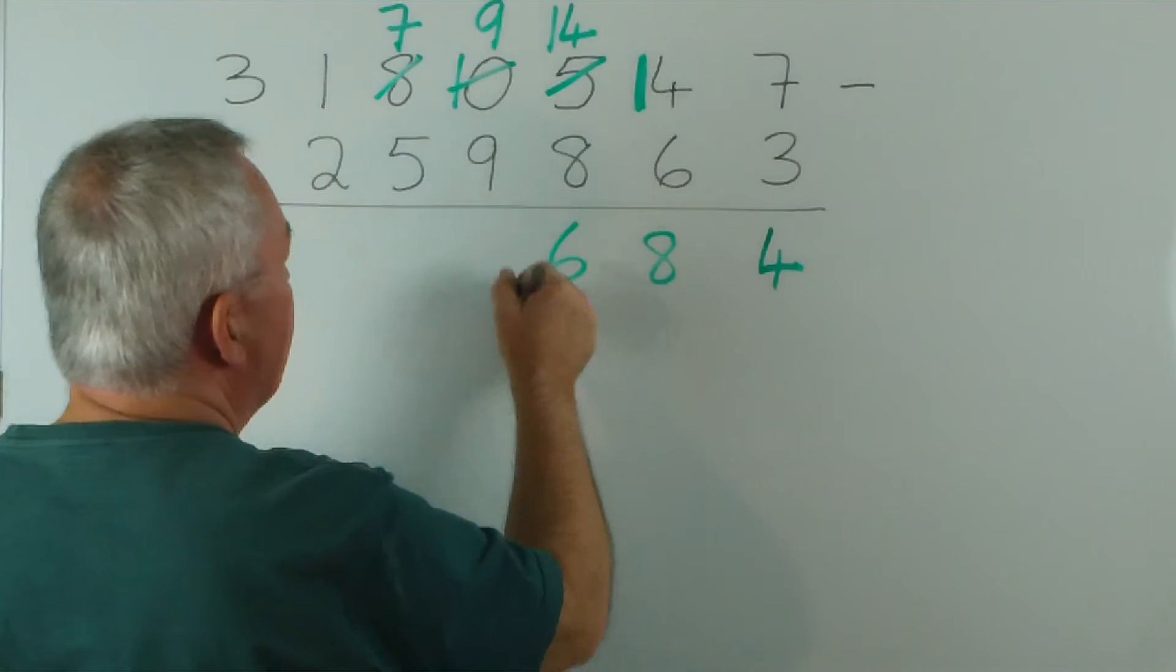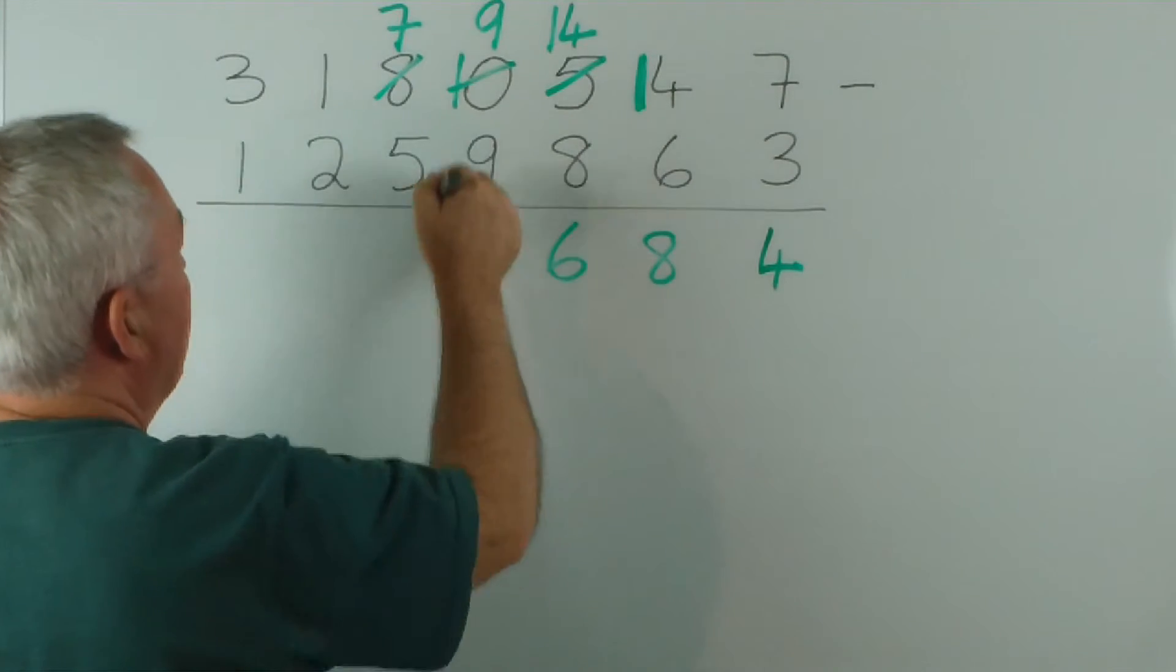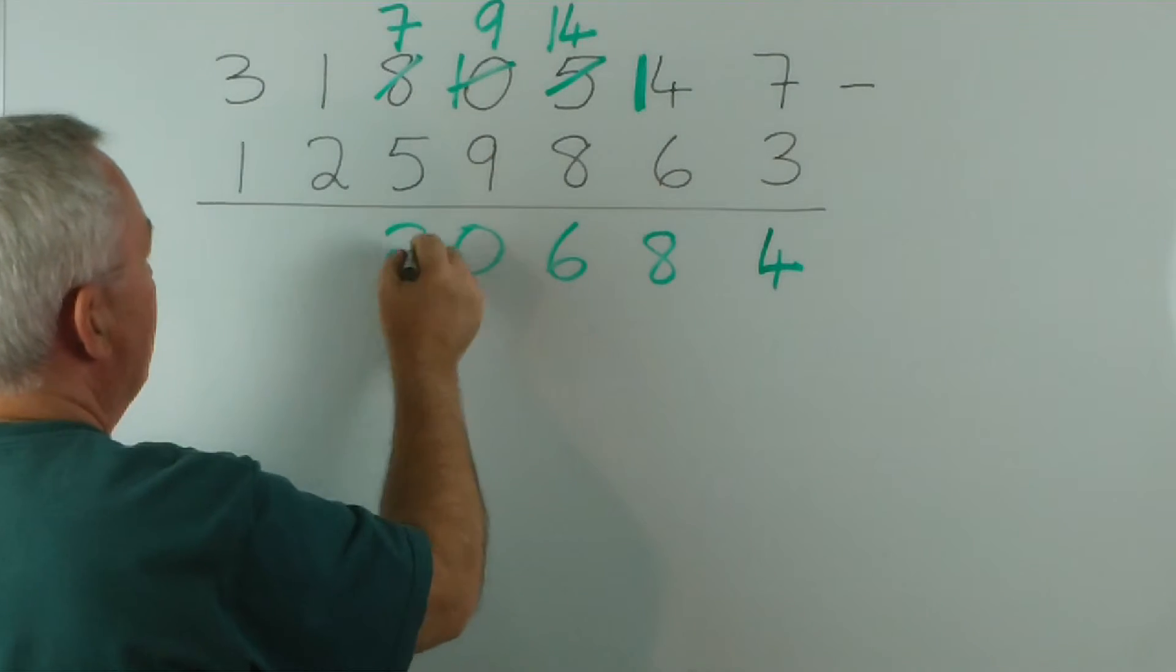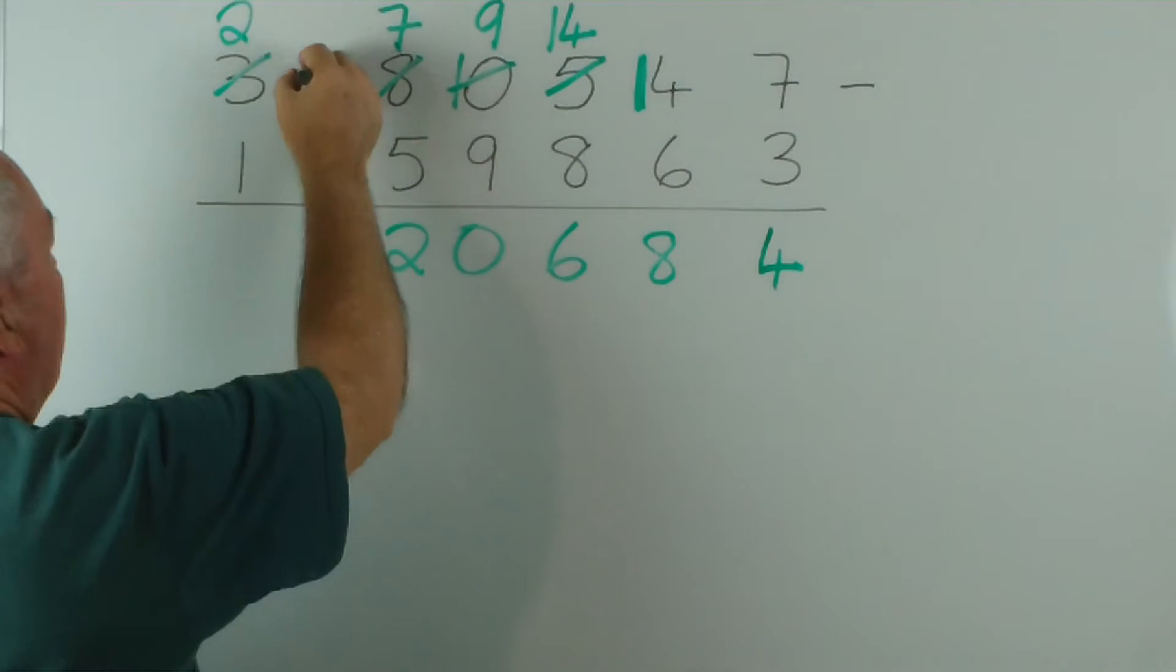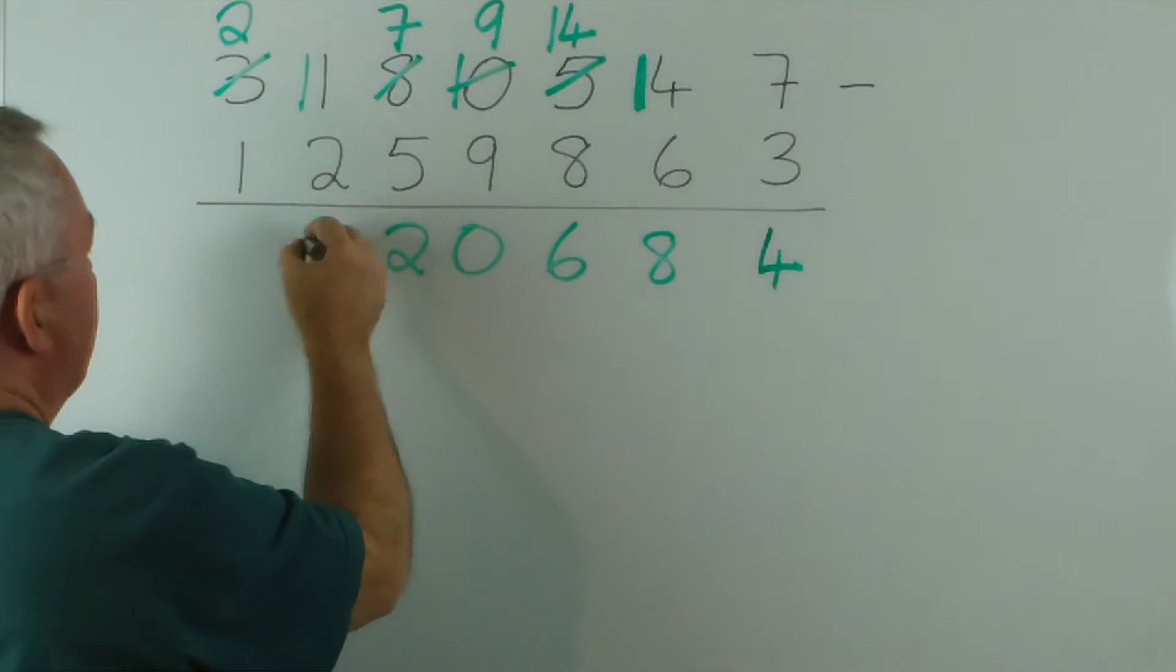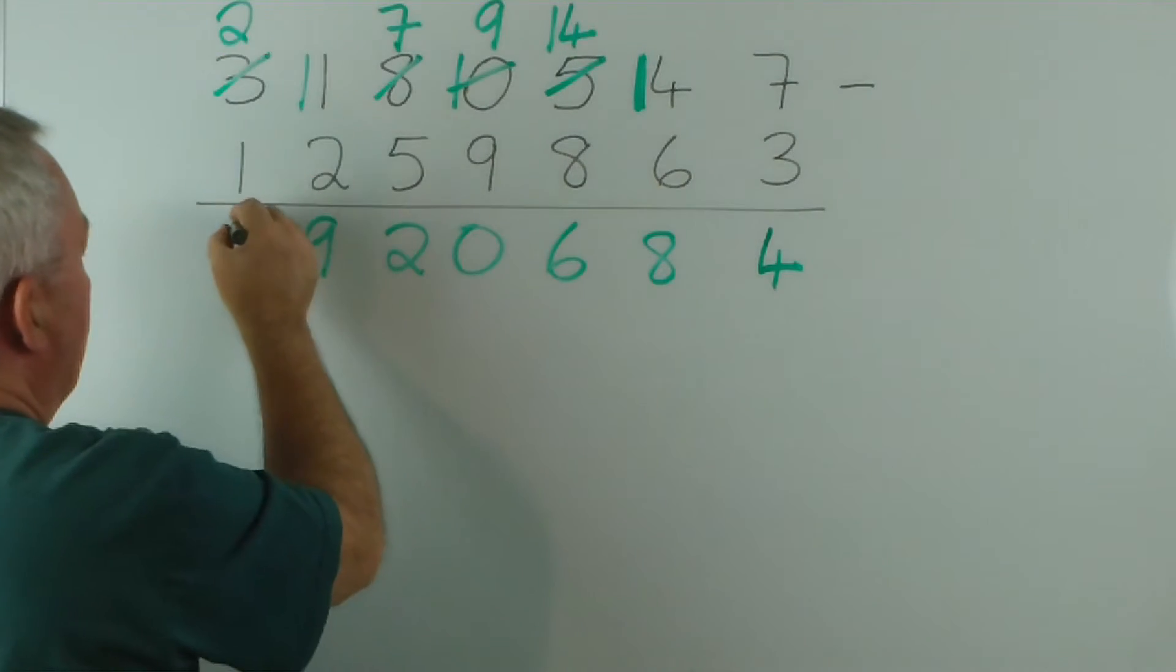Fourteen minus eight is six. Nine minus nine is zero. Seven minus five is two. Two from one we can't do, so, again, we borrow one of those. Eleven minus two is nine. And two minus one is one.